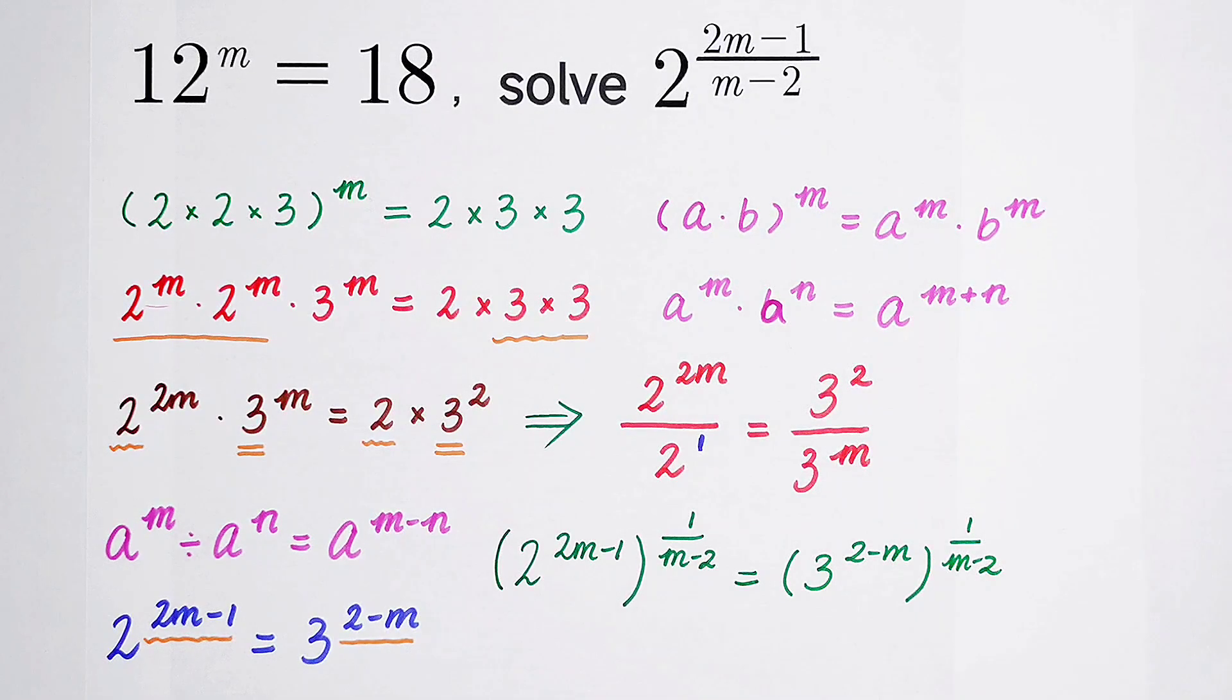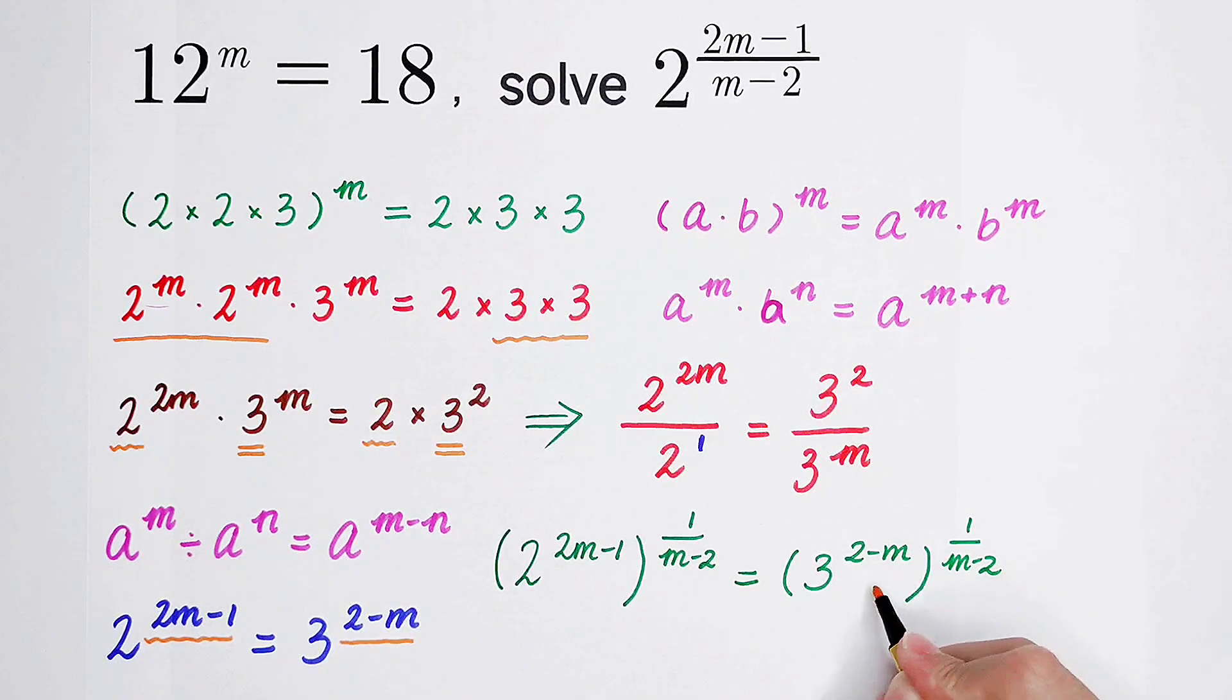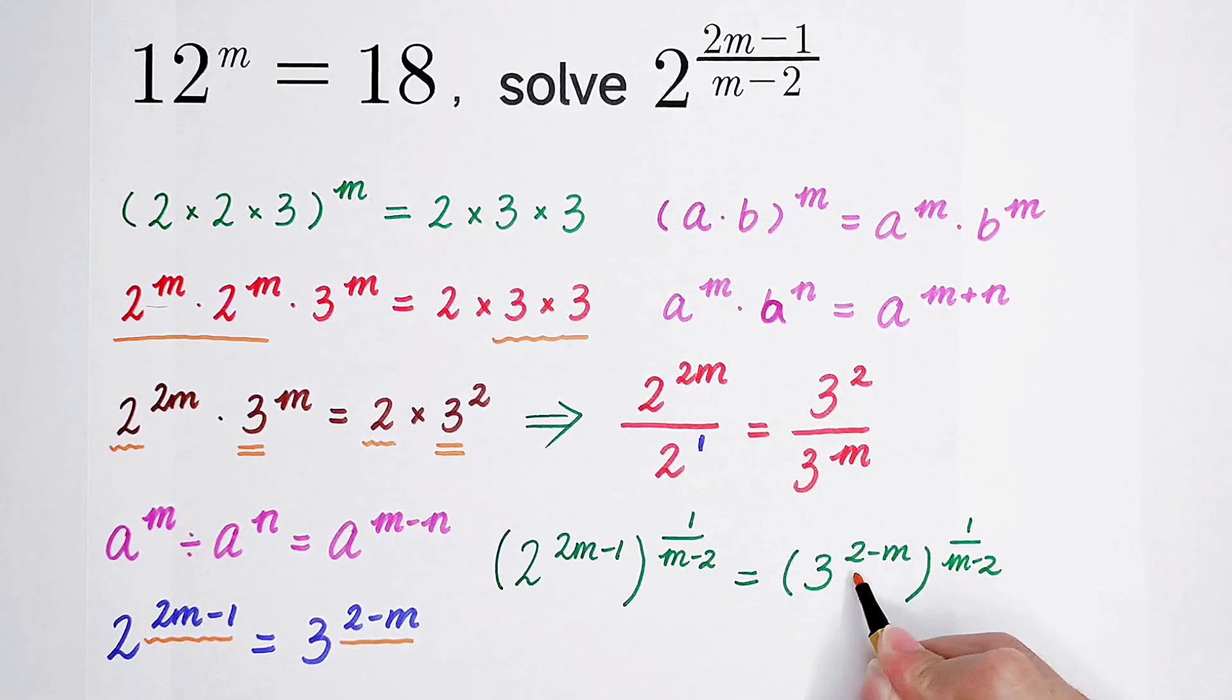So here we also use a formula. But I think there isn't any place to write it. I will tell you. a to the power b, and then all to the power c, it is equal to a to the power b times c. So here 3 is a. 2 minus m is b. And 1 over m minus 2 is c.